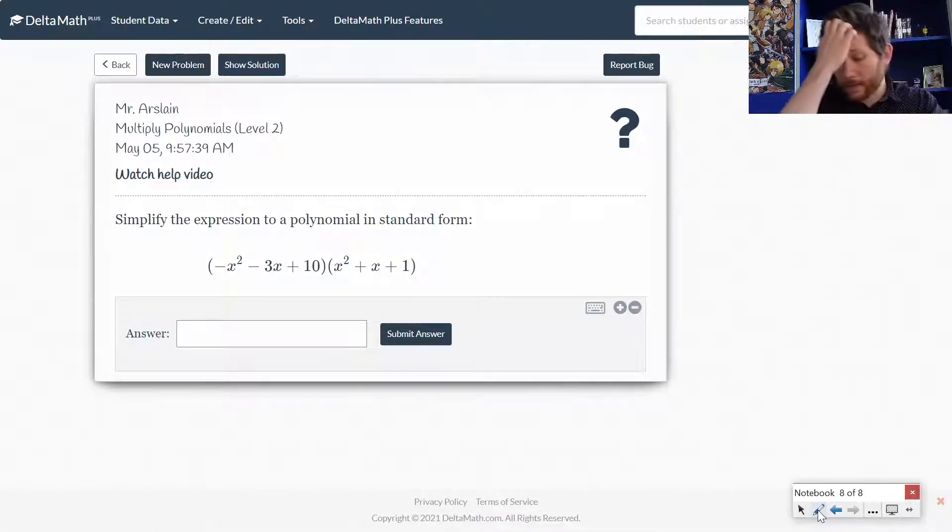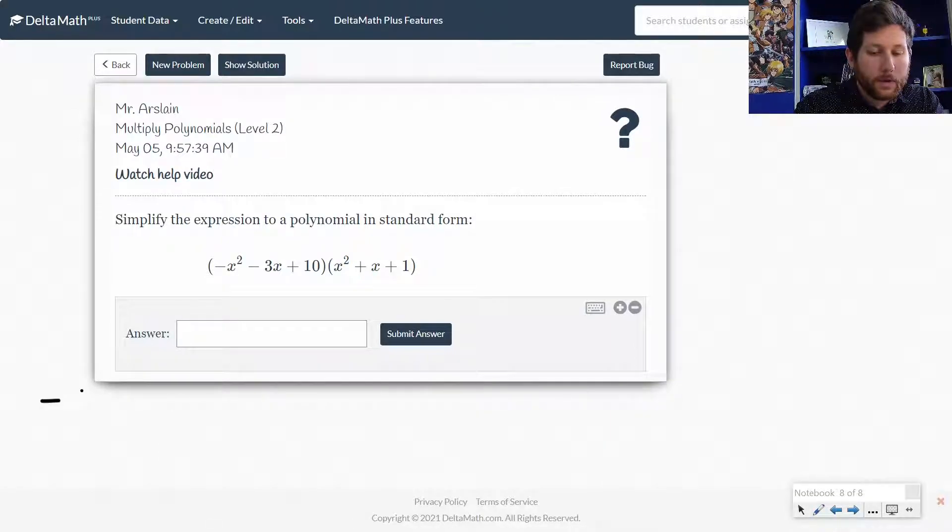So let's go ahead and do that. So negative x times x squared, that is going to be negative x to the fourth. Negative x times positive x is negative x cubed, and negative x times 1 is negative x squared. So that is pretty straightforward.